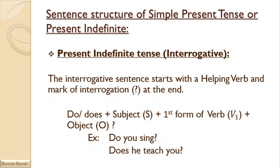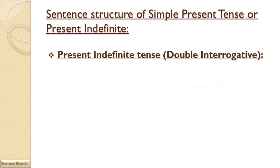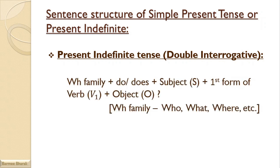Since these are questions, the answers are yes or no type answers. On the other hand, we have present indefinite tense double interrogative. Double interrogative sentences start with a WH-family word — who, what, where, when, etc. — plus do/does + subject + first form of verb + object. For example, 'What does he say?' The answer to this question will be in detail, so double interrogative is used when the answer is to be narrated or explained.